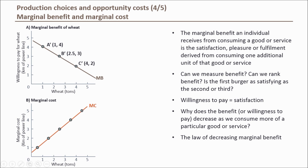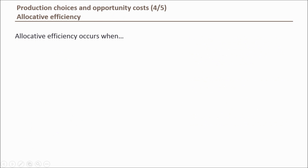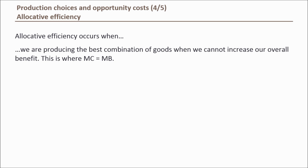Now that we have defined marginal cost and marginal benefit, we can use the two concepts to help us identify the allocative efficient combination. When marginal cost equals marginal benefit, we cannot choose a better allocation of goods. Let's explore why this is the case.